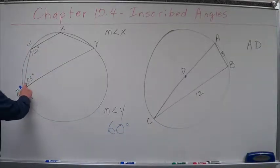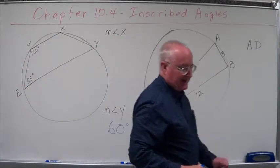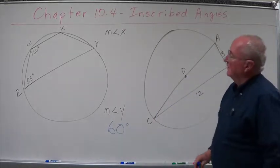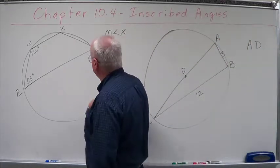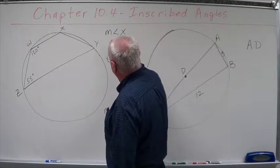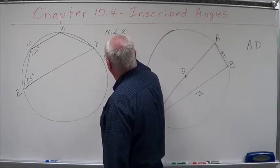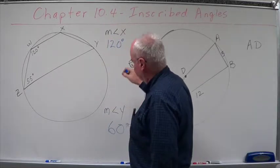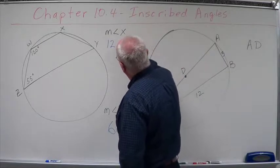What do we add to 55 degrees to get 180? Well, 60 is 120, so this is going to be 125.